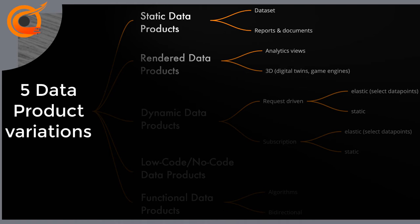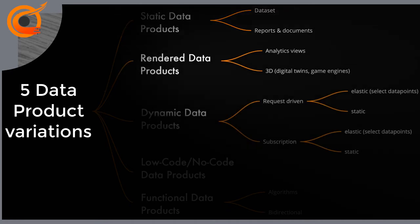Datasets are static and are sometimes updated occasionally. Selling datasets has been around for a long time. An example of a commercial dataset is company contact information. Different kinds of reports and documents go to the same category. Rendered data products offer dynamic, often visualized and formatted views to the data product content. Data products that are compatible with digital twin solutions and game engines such as Unreal, as well as Map Service-compatible data products, fall into this category. These products often resemble services.